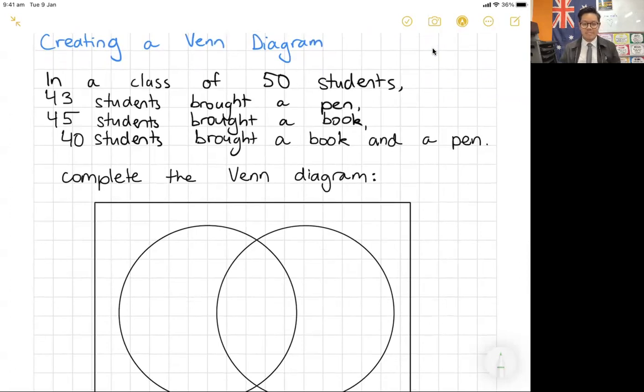Here's our example. In a class of 50 students, that's roughly you guys, 43 students brought a pen—not bad, that's pretty good. 45 students brought a book—very good. But there were only 40 students that brought a book and a pen, they brought both of them. Now what they'll ask you to do is complete the Venn diagram.